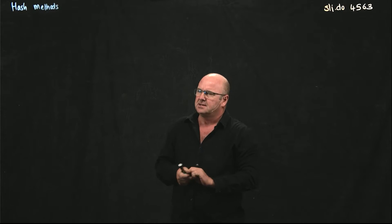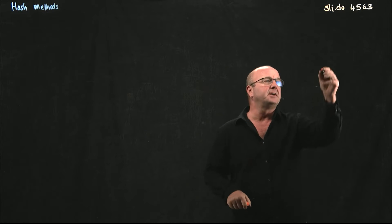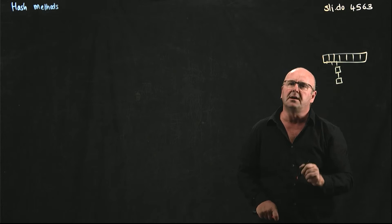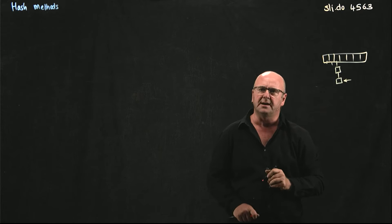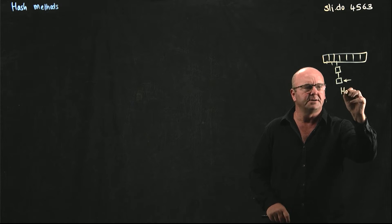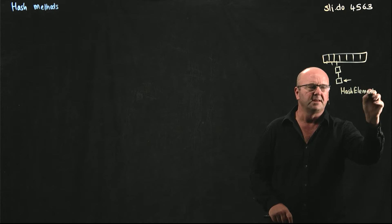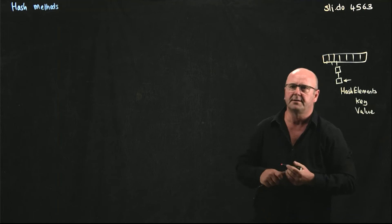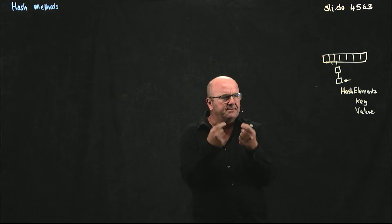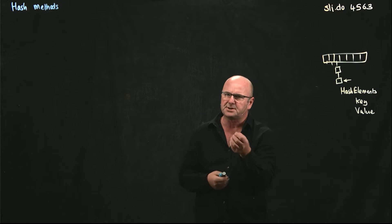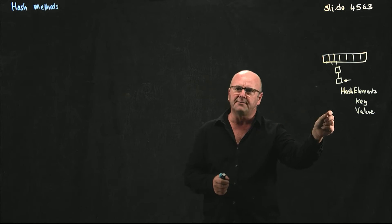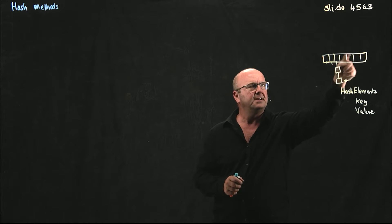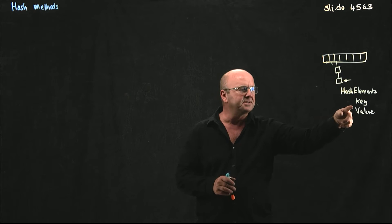We're going to write a chained hash. Our chained hash is going to be an array, and every position in the array is going to have a linked list. The objects we're going to put in there are going to be called hash elements, and a hash element is going to have a key and a value. We're going to use the key as the basis to put things into our hash — choosing which bucket in the array the element goes into based on the hash code returned by the key.